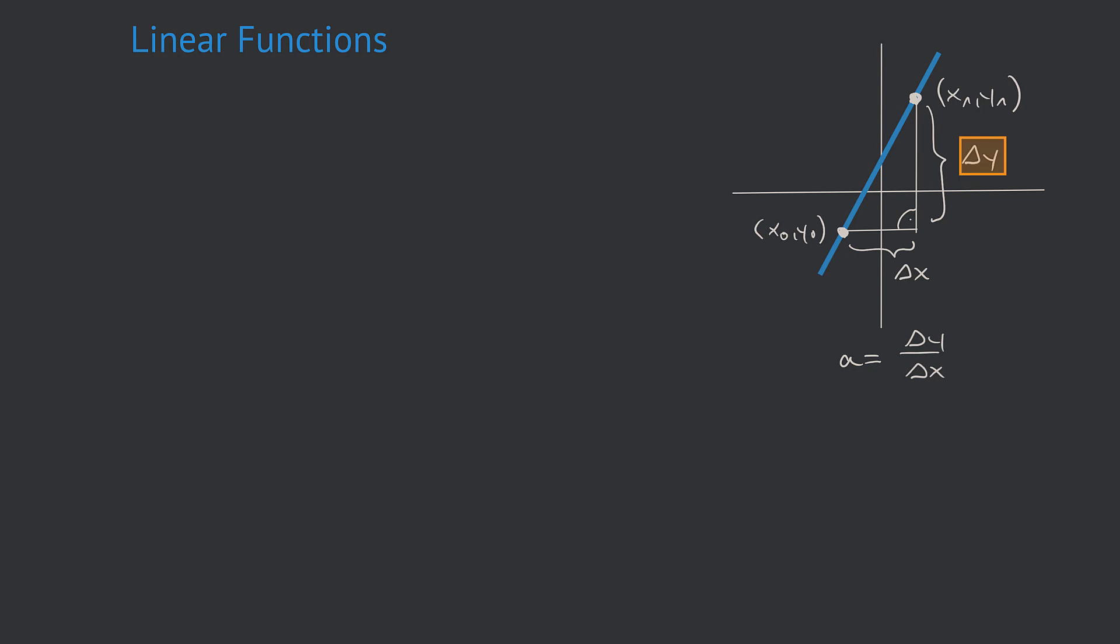For in this situation, delta y is nothing else than the difference between the y coordinates of the two known points, which is nothing else than y1 minus y0.